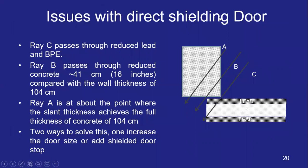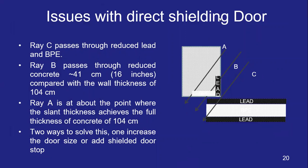When using a direct shielding door, there is an important issue: ray A passes through the entire concrete thickness — say 104 centimeters; ray C passes through lead, BPE, and nearly the full attenuation path; but ray B passes through only part of the required distance — approximately 41 of the 104 centimeters needed. To solve this, one can either extend the door further, or add additional lead and BPE in the region traversed by ray B to compensate for the reduced path length.